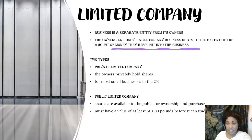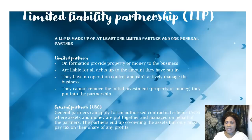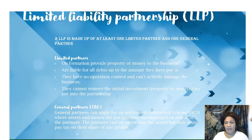For the public limited company, shares are available to the public to buy. Different people can buy and have shares in that public limited company. For a company to become a public limited company in the UK, that company must have at least a value of £50,000.